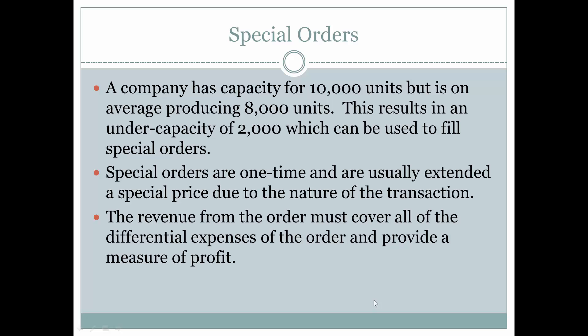Let's look at an example. A company has a capacity for 10,000 units, but is on average producing 8,000 units. This results in an undercapacity of 2,000 units which can be used to fill special orders. Special orders are one-time and are usually extended at a special price — usually less than what they sell to their normal customers, due to the nature of the transaction. The revenue from the order must cover all of the differential expenses of the order and provide a measure of profit.